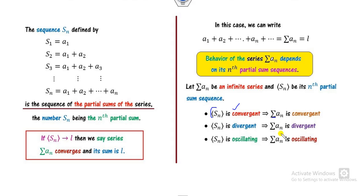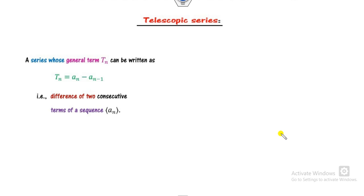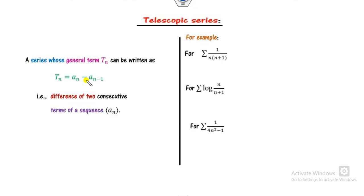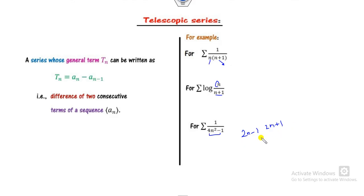Whenever we talk about the nth partial sum sequence, we always look at the telescopic series. A telescopic series is any series whose nth term or general term is in the form of the difference of two consecutive terms. For example, you can see n and n+1 are two consecutive terms; similarly 2n-1 and 2n+1 are consecutive. Whenever there is a term related to consecutive series, you have to apply the nth partial sum sequence test.